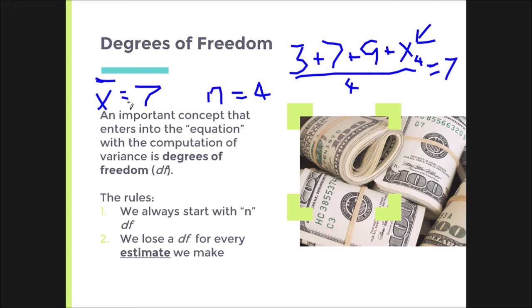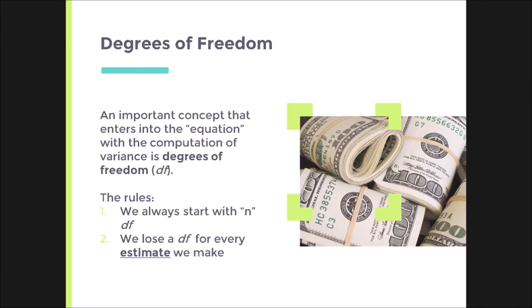So once I've estimated the mean, I have constrained a score. It must be nine. It cannot be anything else. It's no longer free to vary. So this is the essential process and principle behind degrees of freedom.